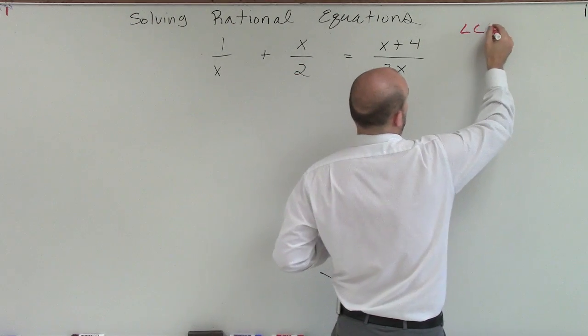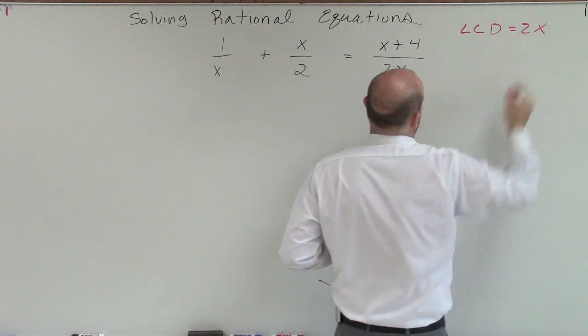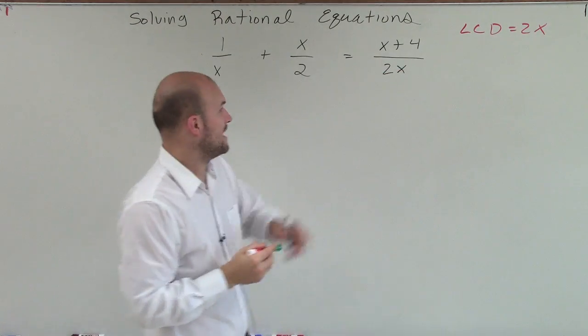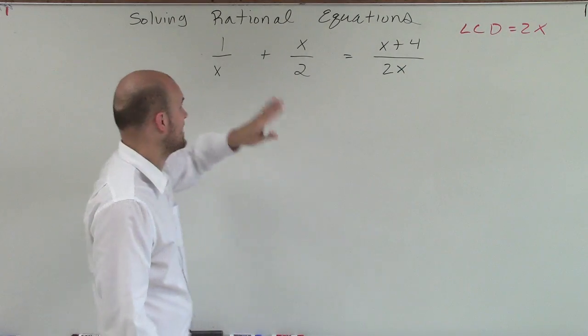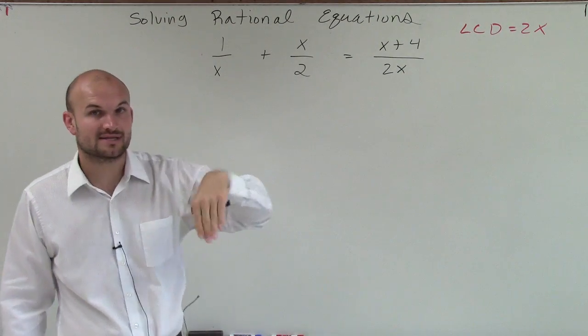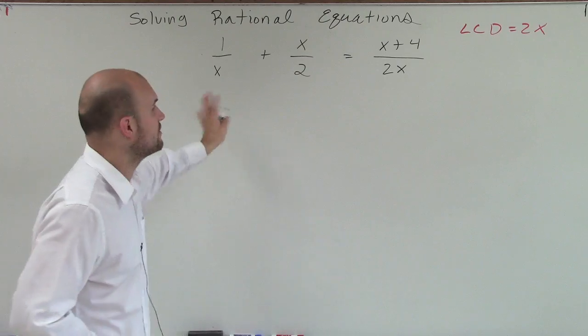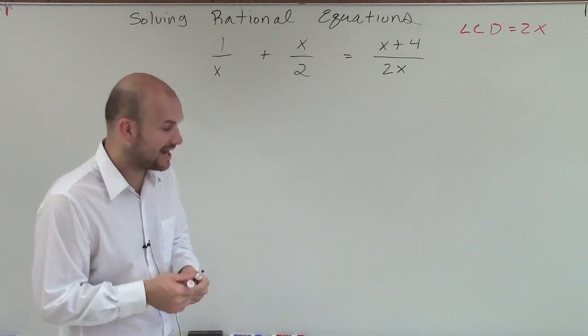Well, if I say my LCD is 2x, we know that obviously 2x divides into 2x. 2 divides into 2x, x times, and x divides into 2x, 2 times. So therefore, each one of my denominators divide into my LCD.